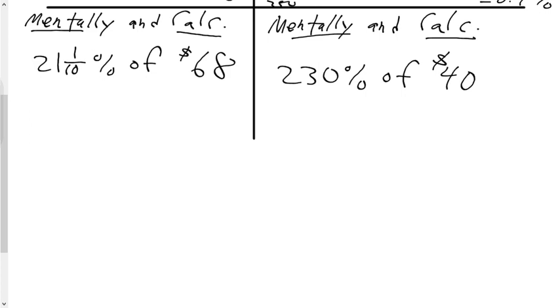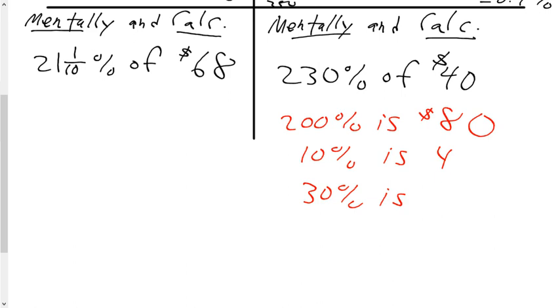Our last question says, mentally calculate 230% of $40. And so the first thing we're going to do is find 200%, and that's going to be doubling a number, which is $80. 10% move the decimal, which is $4. And 30%, which is 3 times 10%, which would be $12. Once we know that, we're going to take our 200%, add it to our 30%, and we're going to get $92.